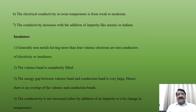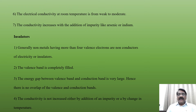Now we see the important characteristics of insulators. First, generally non-metals having more than four valence electrons are non-conductors of electricity, or they are termed insulators. Second, the valence band is completely filled. Third, the energy gap between the valence band and conduction band is very large, and hence there is no overlap of the valence band and conduction band, and electron transfer from the valence band to the conduction band is not possible. Fourth, the conductivity is not increased either by addition of an impurity or by change in temperature.